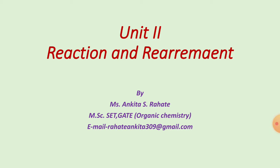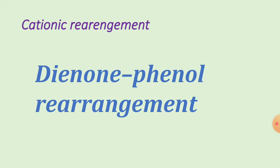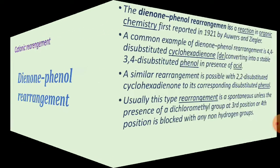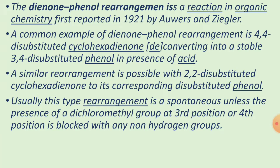MHC Part 1 Paper 3 organic chemistry: reaction and rearrangement. The next reaction is a cationic rearrangement — the diynone-phenol rearrangement — in which the intermediate is a carbocation. The diynone-phenol rearrangement is a reaction in organic chemistry, first reported in 1921 by Auwers and Ziegler.